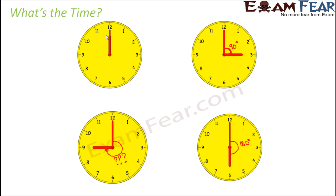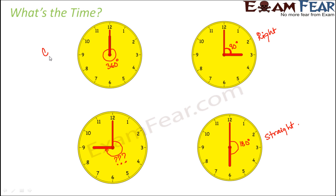Finally, the clock strikes 12. The hour hand has actually covered one complete revolution, so it has completed 360 degrees. So at 3 o'clock you have your right angle, at 6 o'clock your straight angle, and at 12 o'clock your complete angle. When you observe the angle formed between the minute hand and the hour hand, you see that as time passes from 3 to 6 to 9 to 12 o'clock, the angle keeps increasing.